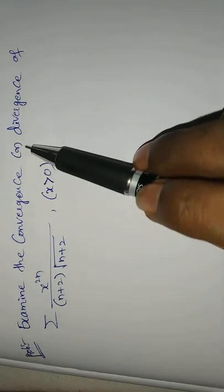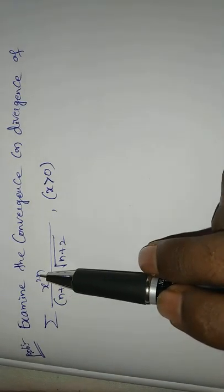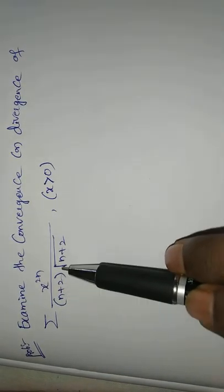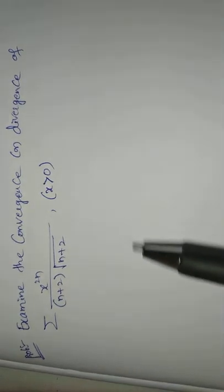Examine the convergence or divergence of the summation of x^(2n) divided by (n+2) times the (n+2)th root of (n+2).